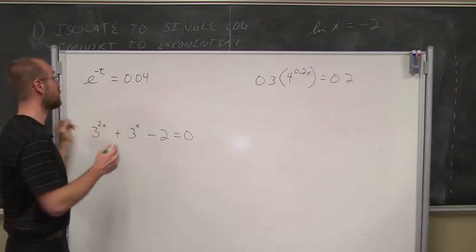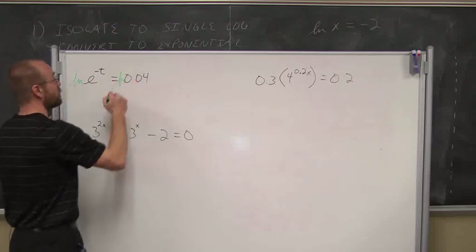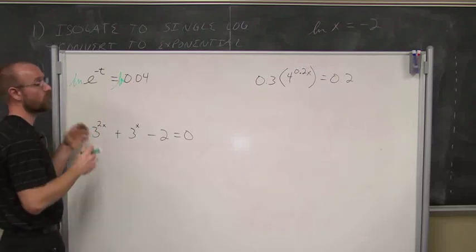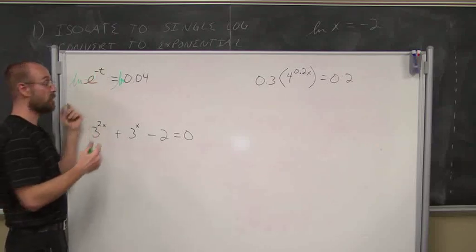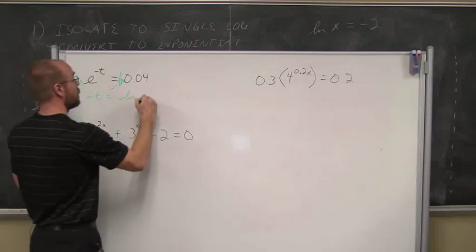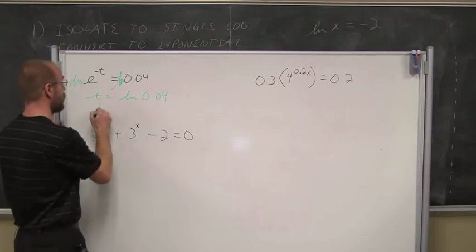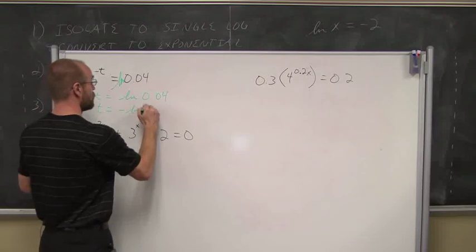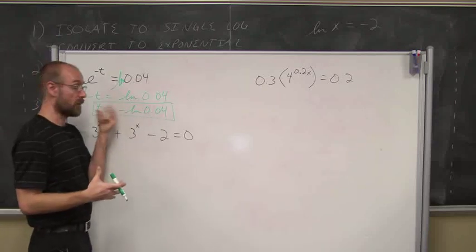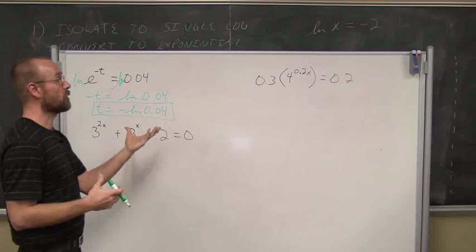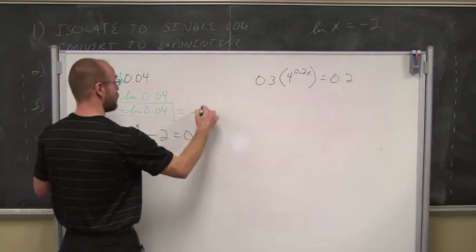I want to do something that maybe I can use in my calculator, and I notice the base is e. I know my calculator can do a natural log, and this is the natural number. So what I'm going to do is I'm going to take the natural log of this side. What I do to one side, I have to do to the other, so I'm taking the ln of both sides. Using my properties of logarithms or exponents, I know that this simplifies to the power, negative t in this case. And now, to get t by itself, I just have to change the sign or divide by negative 1. Negative ln of 0.04.